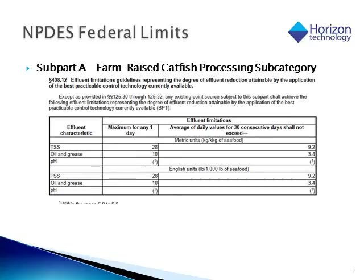On this slide, we see an example clipped from the Code of Federal Regulations for the farm-raised catfish processing subcategory. Oil and grease is listed as one of the effluent characteristics that should be monitored. They give both a limitation for any one day and for an average over 30 days, indicating they understand there's variation over time. This gives a clear indication of what would be allowed from that industry into the waterway or publicly owned treatment works, to be refined in negotiation for a specific permit.